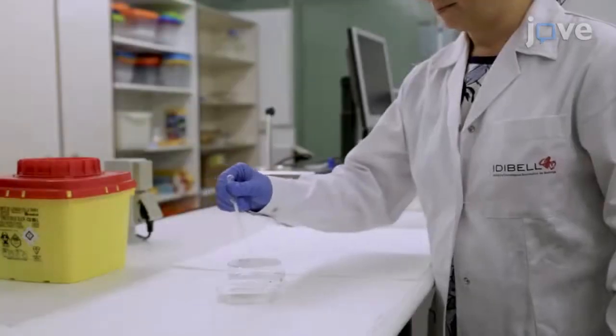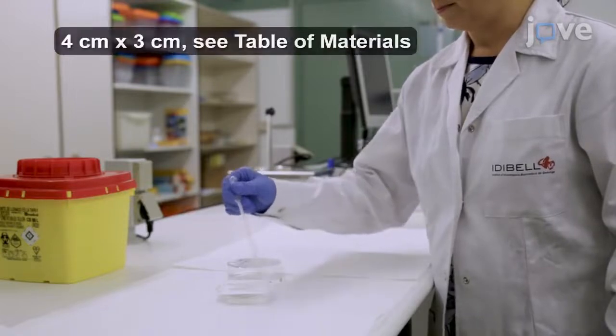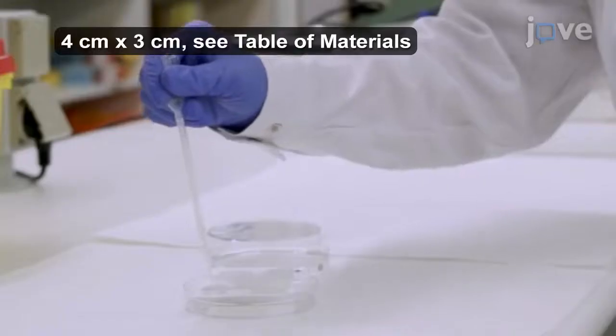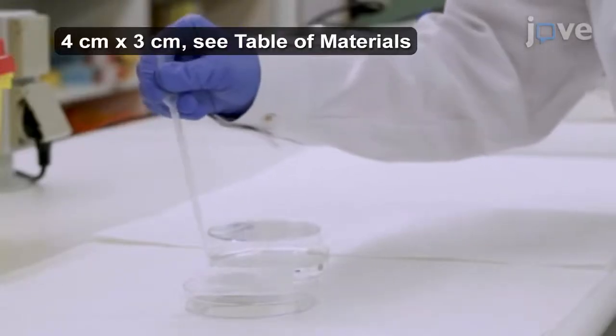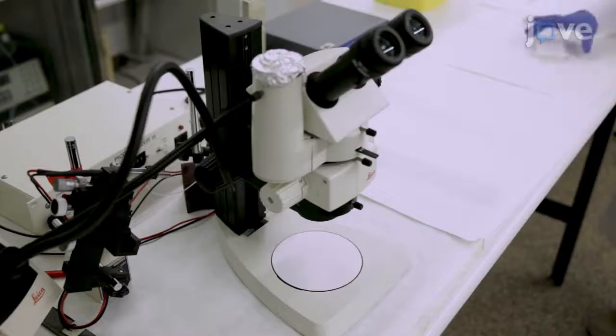Begin the transection procedure by wetting two pieces of cellulose qualitative filter paper in 0.02% MS222 anesthetic solution and placing them under the dissecting scope.